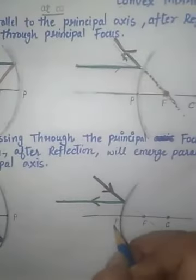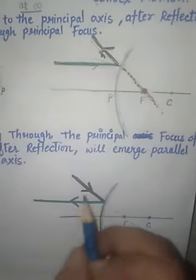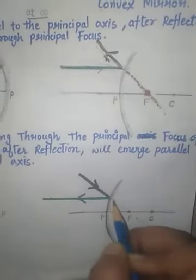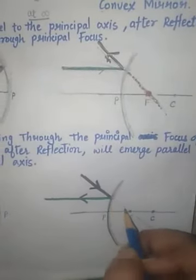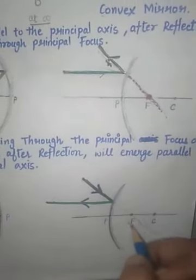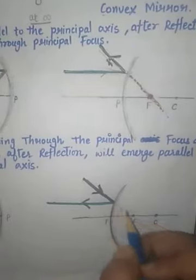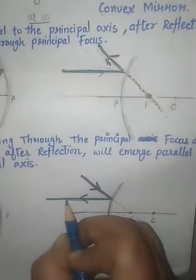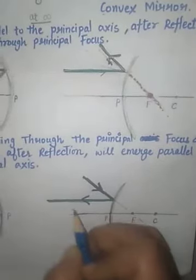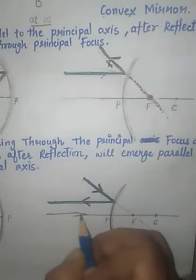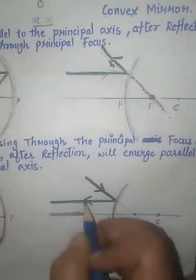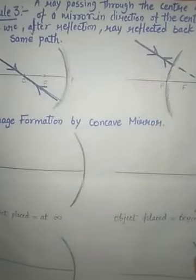The same rule applies in the convex mirror. A ray coming directed towards the focus, after reflection, gets parallel to the principal axis.